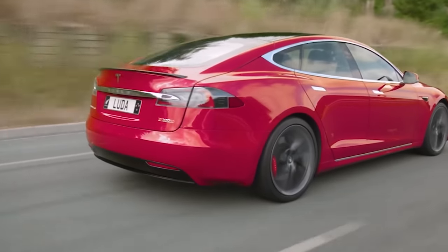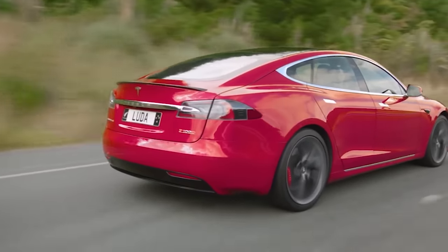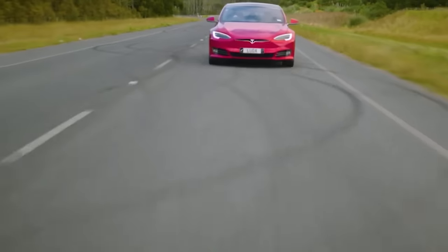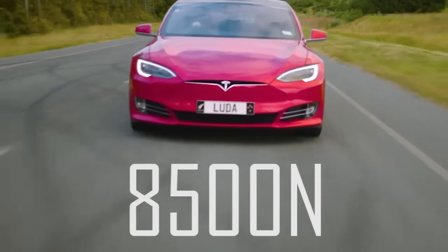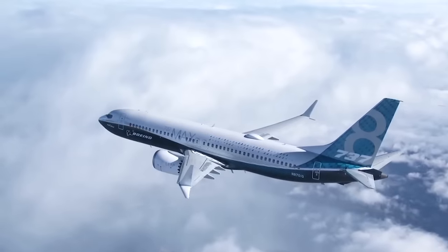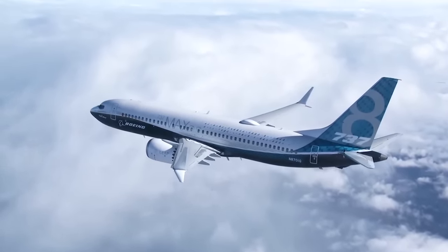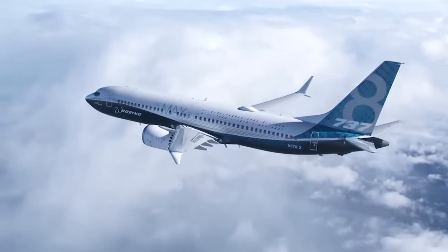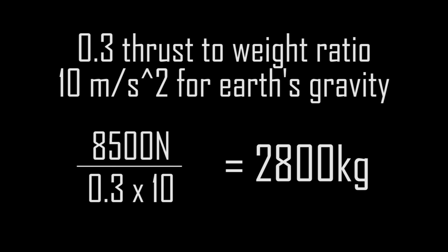With a Tesla Model S battery pack running at 310 kilowatts, this creates a thrust of 8,500 newtons. Using the thrust to weight ratio of a large commercial plane, like the 737, which is about 0.3, it means that if this was scaled up, the electric jet could fly a plane of approximately 3 tons.